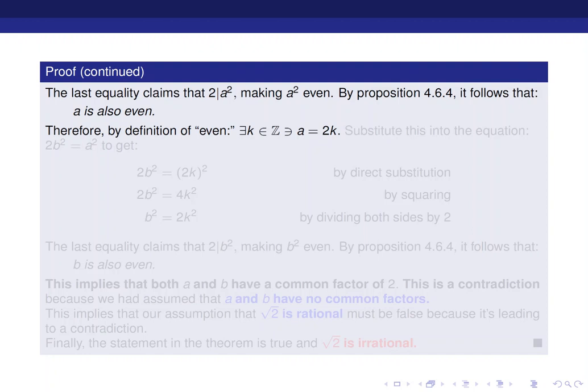So we can take this result and substitute it in the last line on the previous slide. 2b squared equals to a squared. And when we do that, when we replace a with 2k, we're going to get 2b squared equals 2k to the power of 2.